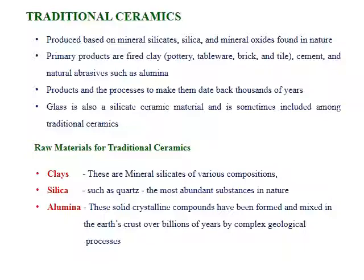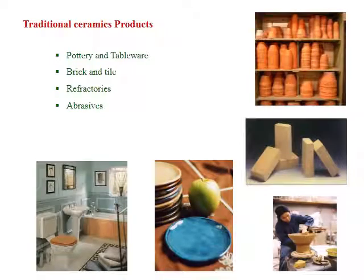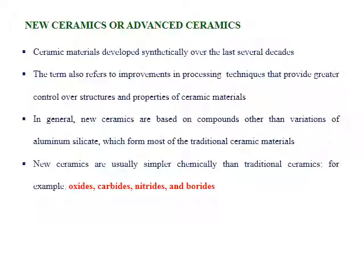The raw materials for traditional ceramics are clay, silica, and alumina. Clay consists of mineral silicates of various compositions. Silica, such as quartz, is the most abundant substance in nature, and alumina is a solid crystalline compound formed in the earth's crust over billions of years by complex geological processes. Products from traditional ceramics include pottery, tableware, brick and tile, refractories, and abrasives — materials we use in our day-to-day household activities.